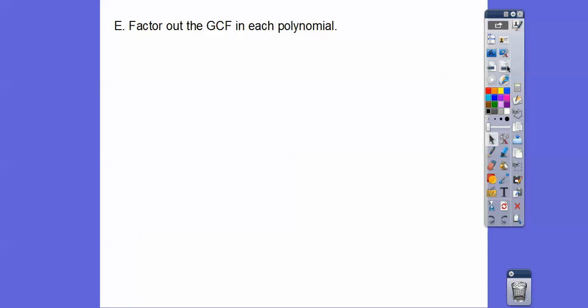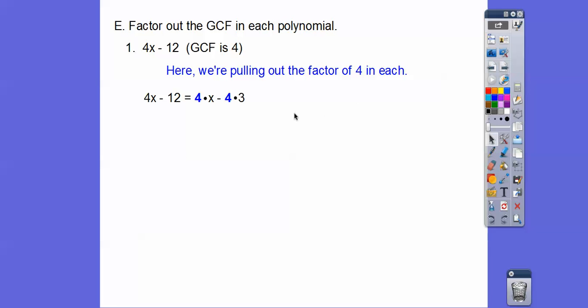Now we're going to factor out the GCF of polynomials. In the first few, I'll tell you what the GCF is. The GCF is 4, so we rewrite: 4x is 4 times x, and 12 is 4 times 3. We pull the 4 out and we're left with x minus 3. Factoring is the opposite of multiplying — a month ago I would have said distribute the 4 through, doing 4 times x and 4 times 3 to get back where we started.